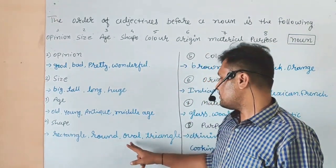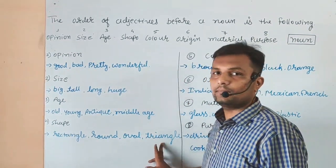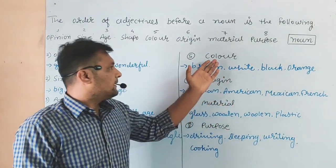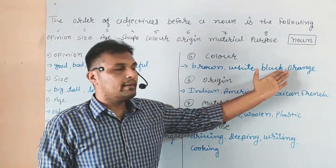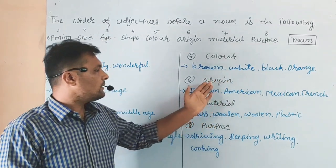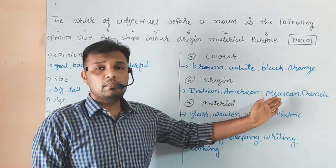Color: brown, white, black, orange. Origin: Indian, American, Mexican, French.